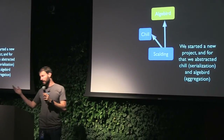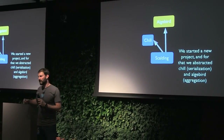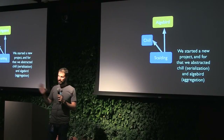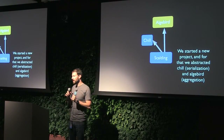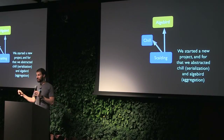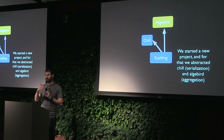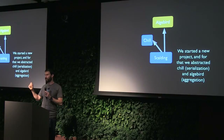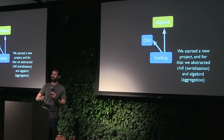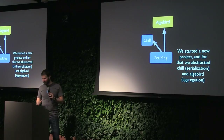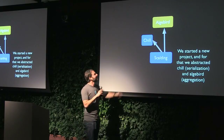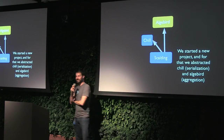The first thing we produced was Chill, a serialization library. It has nothing to do with Scalding — people use it with Akka, and Spark uses it. It serializes almost any Scala type. It's not type-safe serialization, which is both good and bad — it can take almost any data and do a very good job. All our data at Twitter goes through this when passing between mappers and reducers and we almost never have a problem.